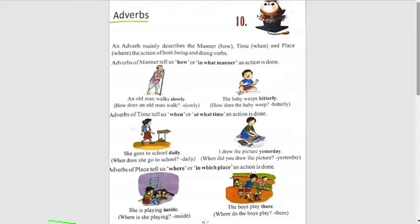Adverbs of manner tell us how or in what manner an action is done. An old man walks slowly. How does an old man walk? Slowly. The baby weeps bitterly. How does the baby weep? Bitterly.